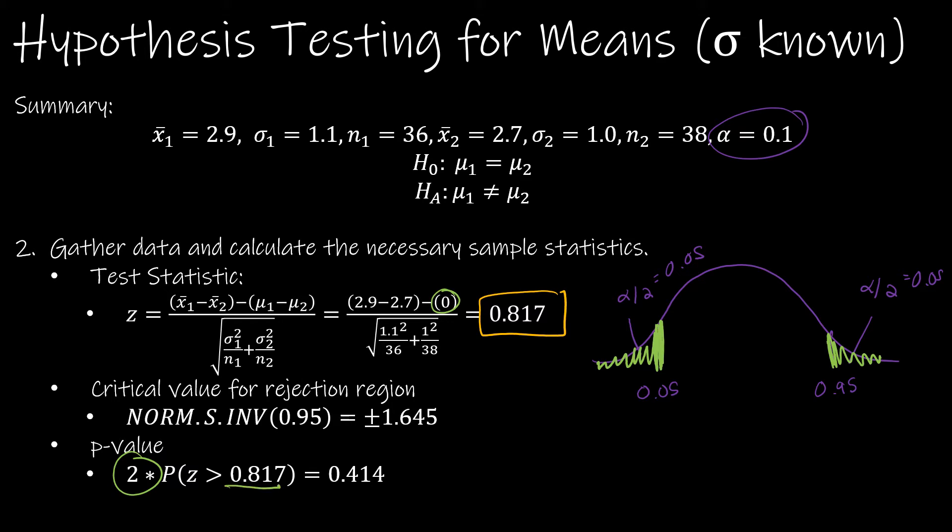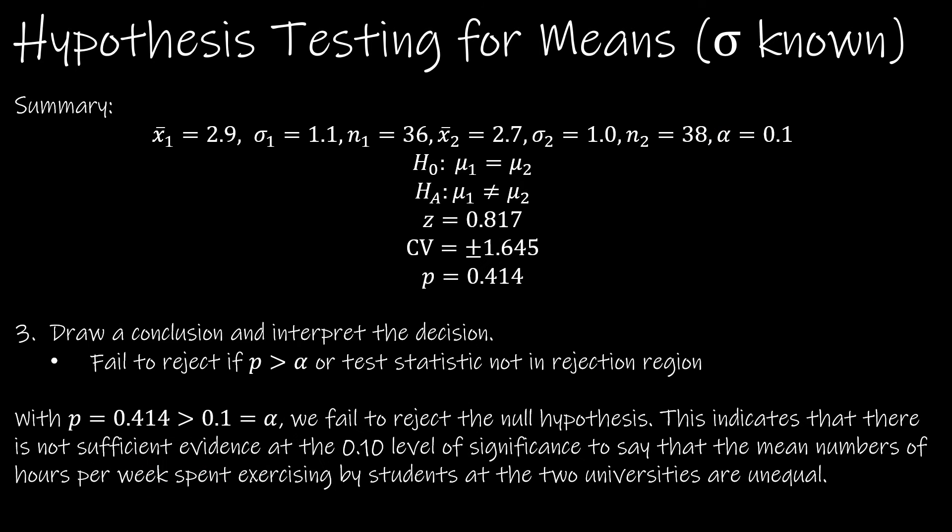And because my z-score was positive, I'm finding the area to the right and then times two. If my z-score were negative, I'd find the area to the left and then times two. Draw a conclusion.